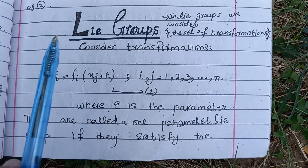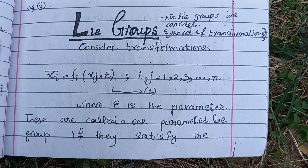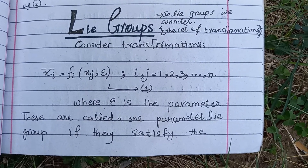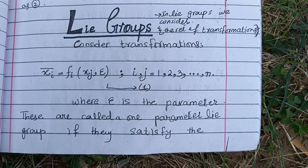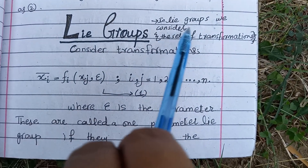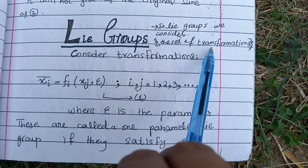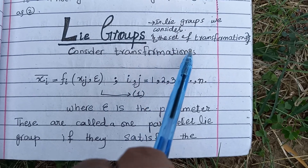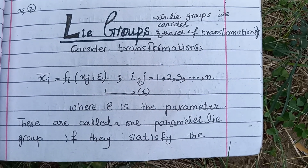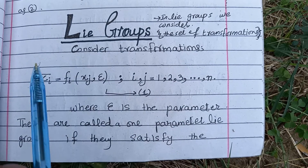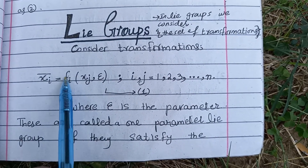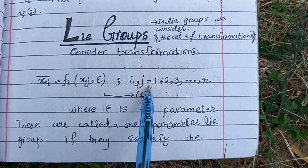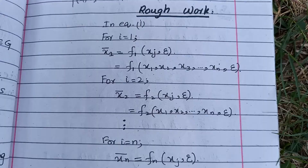But now in Lie groups, I am explaining group theory first so you don't confuse those groups with Lie groups — because in Lie groups we discuss transformations. Here we are given a set of transformations and we have to check whether the given set of transformations forms a Lie group or not. For example, consider the transformation x̄ᵢ = fᵢ(xⱼ, ε), where i and j vary from 1 to n.